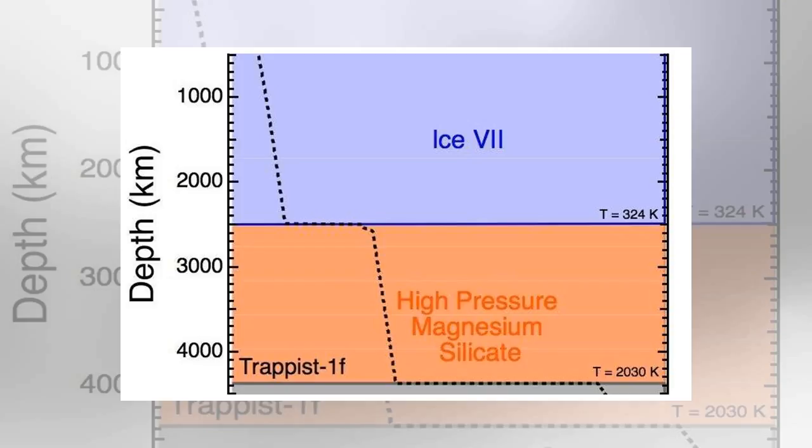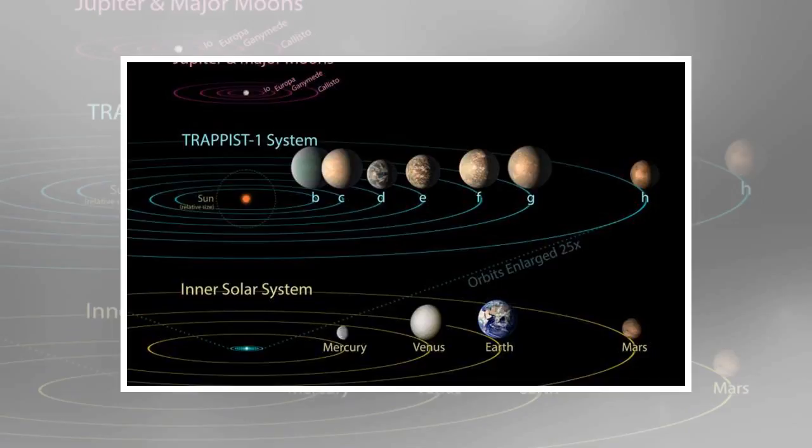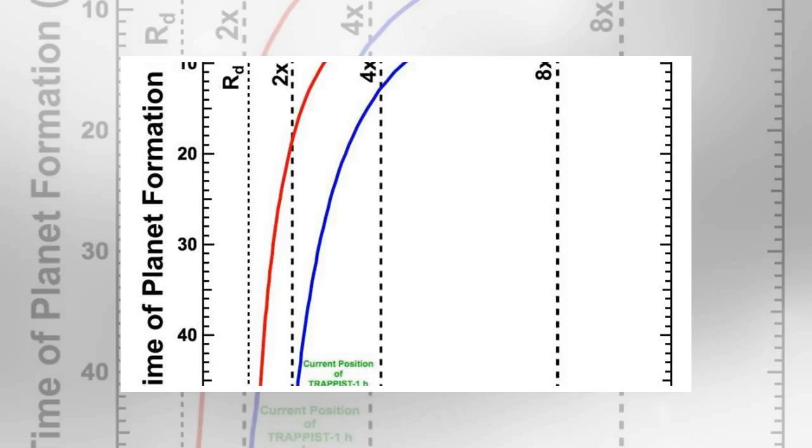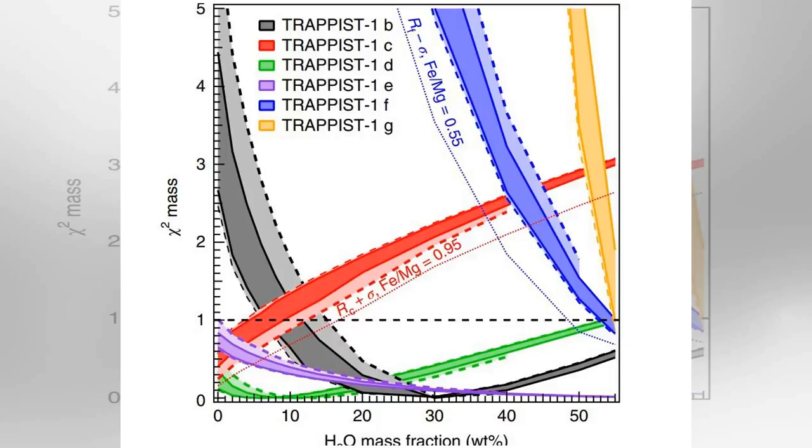Abstract: Multiple-planet systems provide an ideal laboratory for probing exoplanet composition, formation history, and potential habitability. For the Trappist-1 planets, the planetary radii are well established from transits, with reasonable mass estimates coming from transit timing variations and dynamical modeling. The low bulk densities of the Trappist-1 planets demand substantial volatile content.